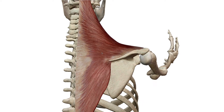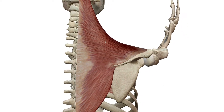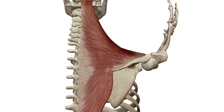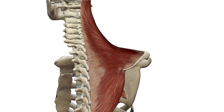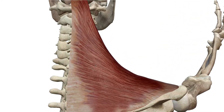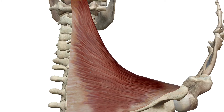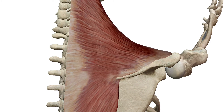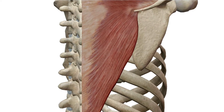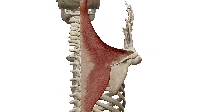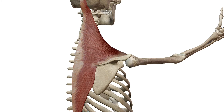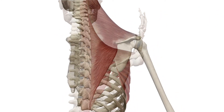Even though the trapezius is one muscle, each region has fibers running in different directions. The top region has fibers running up and down, the middle layer runs parallel — east to west — and the lower region also runs more north to south. So it's not as simple as just doing a shrug exercise to work these muscles. You also have to do things like pull-downs, just like with the latissimus dorsi, which is the pull-up muscle on the posterior side of the back.